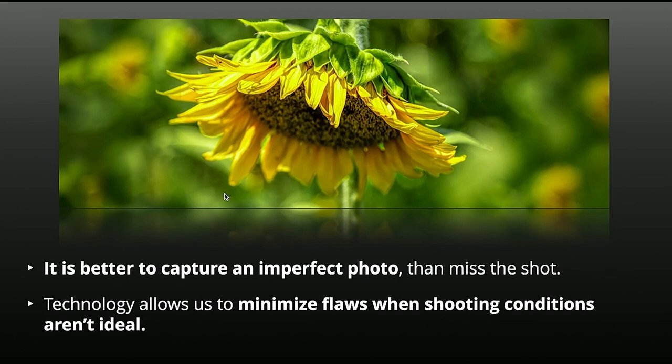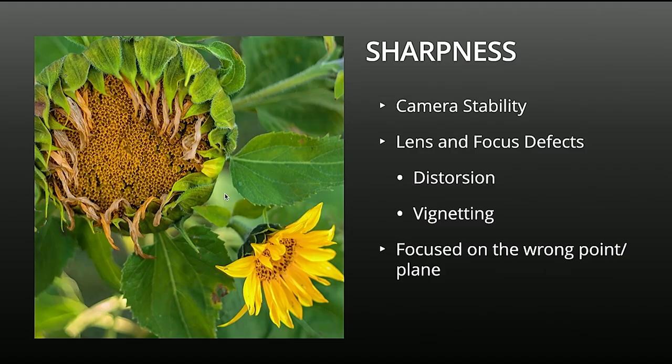Luckily we're at a point with technology where we're able to minimize most of those flaws that you might have when shooting conditions aren't ideal. There are a lot of times where we're shooting in low light and we don't have the ability to add artificial light. So let's work on fixing some of those things. When it comes to sharpness, the big one is camera stability. I'm a huge fan of in-body image stabilization and also stabilized lenses, but I've been shooting long enough to have started when those things were not even possible.